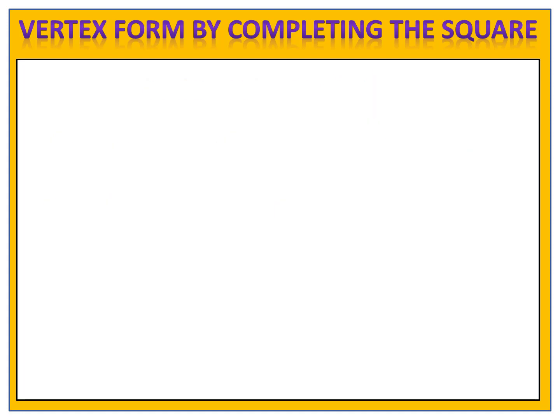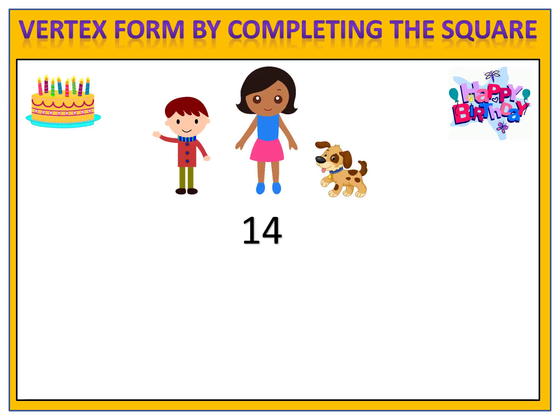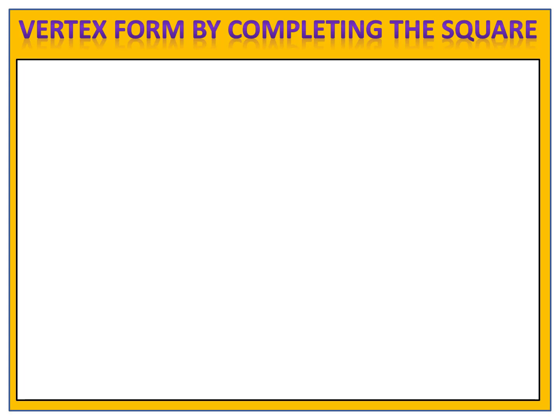Hold on to that thought for a moment. One other thing to think about: suppose Jenny is celebrating her birthday and she is 14 years old. I could say she is 14 plus 0 years old, or 14 plus 5 minus 5 years old — a weird way to say it, but it's still 14. Or 14 plus 8 minus 8, or 14 plus any number minus the same number, and her age is still 14. All of these things are going to come in very handy as we learn how to complete the square.